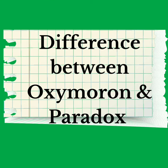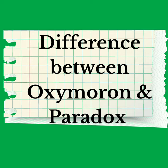Let me tell you the difference between oxymoron and paradox. Oxymorons combine contradictory words, but paradoxes combine contradictory ideas. Usually, oxymorons are made up of just two words, but paradoxes are complete sentences, sometimes entire paragraphs.